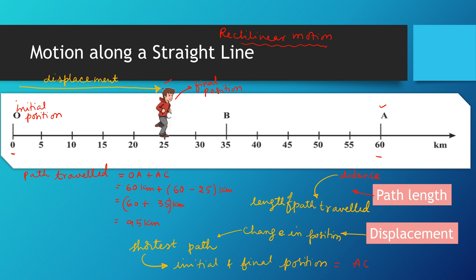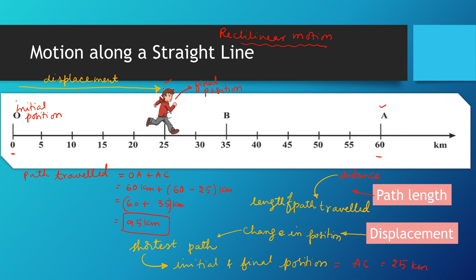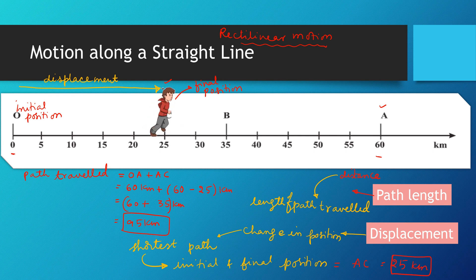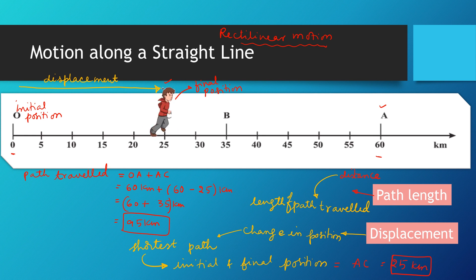The shortest path between initial and final position is equal to AC. How much is the length AC? Length AC is 25 kilometers. Now look at the magnitude of the distance — 95 kilometers — and the magnitude of the displacement — 25 kilometers. Distance is greater. From this we learn that distance is going to be greater than or equal to displacement. They can be equal when the body moves straight forward and doesn't return back. In that case, displacement and distance are the same.